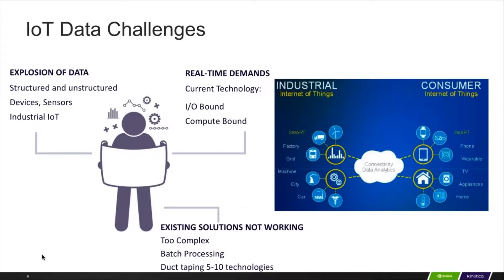There are primarily two different kinds of IoT data types: consumer IoT and industrial IoT. And depending on the organization that you belong to, that defines which data feeds you care about, which data feeds you have access to, and how you want to use these IoT data types.